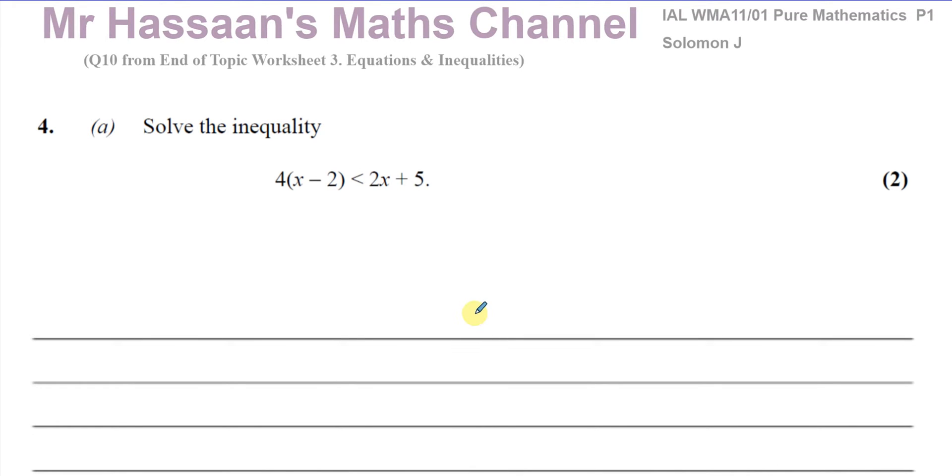This is a question from my end of topic worksheet about equations and inequalities. I'm going to go through both parts just for completeness sake. So this is an inequality we have to solve. What we need to do is expand the brackets here, so we're going to have 4x minus 8 is less than 2x plus 5.